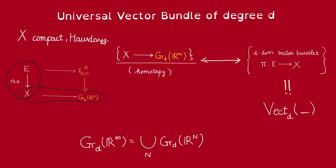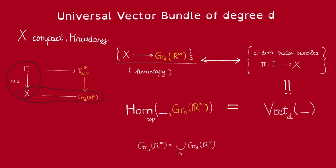In other words, if we define this functor to spit out for every X the set of d-dimensional vector bundles over X, then it can be represented by this Grassmannian of R infinity. And this concludes our discussion of how to view d-dimensional vector bundles over X as homotopy classes of maps from X to the d-Grassmannian.